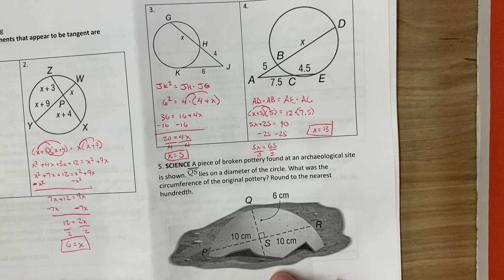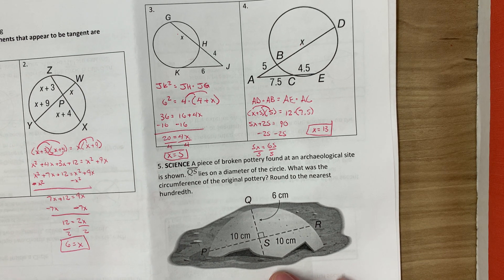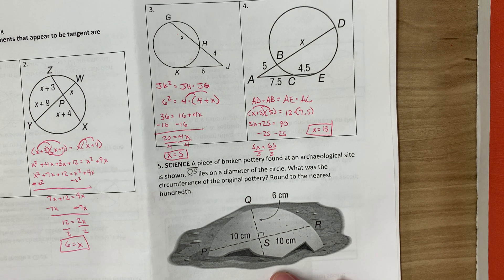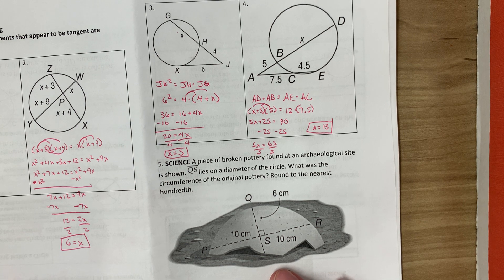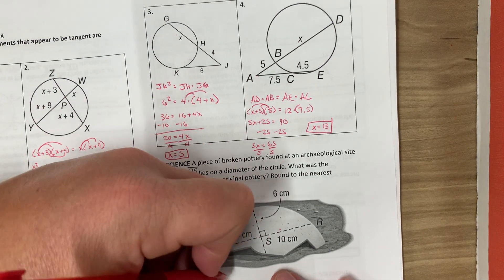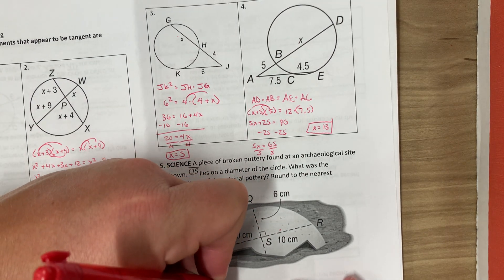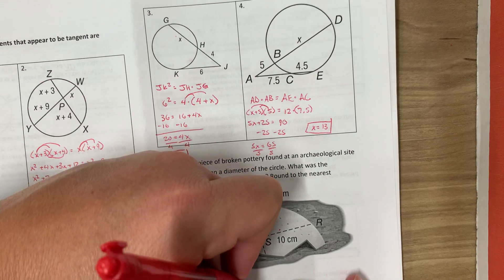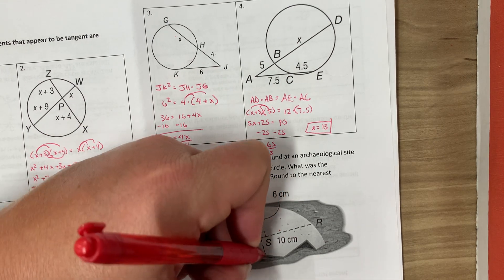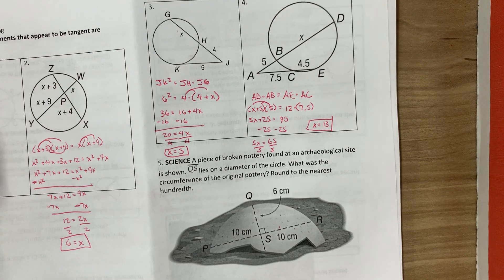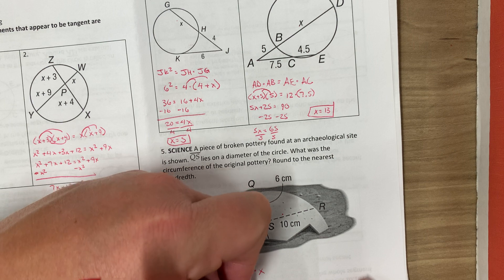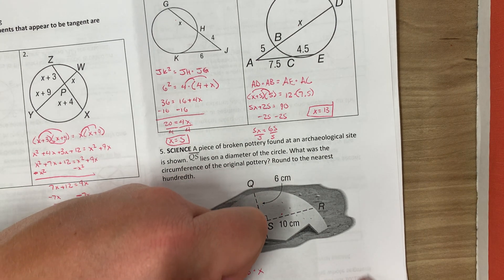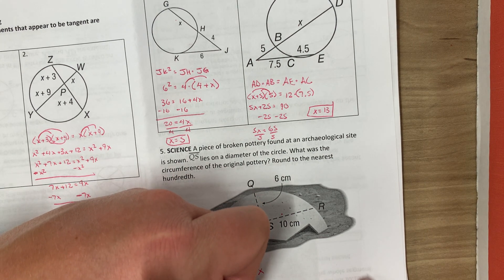Alright, a piece of broken pottery found at an archaeological site is shown. QS lies on a diameter of the circle. What was the circumference of the original pottery? Round to the nearest hundredth. So we're kind of just ballparking this. But we'll have 10 times 10 equals 12, because you're going to be interior stuff, equals 6 times X, because we don't know what this side will be that's been broken. So we'd have 100 equals 6X. I divide by 6. So X is going to equal 16.67.